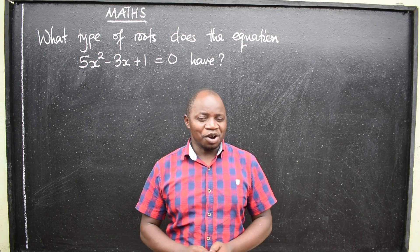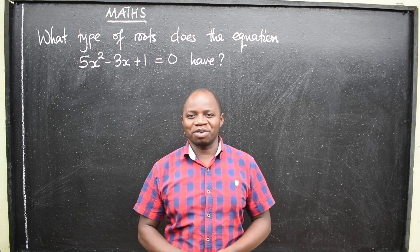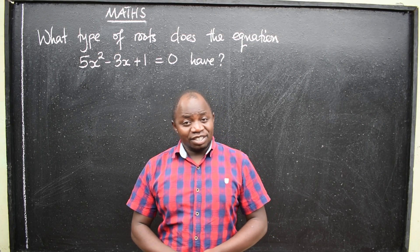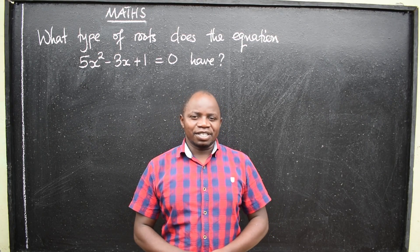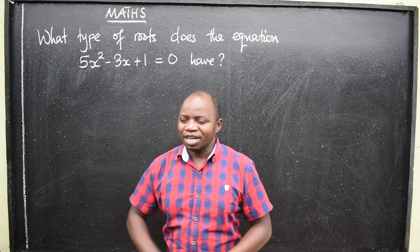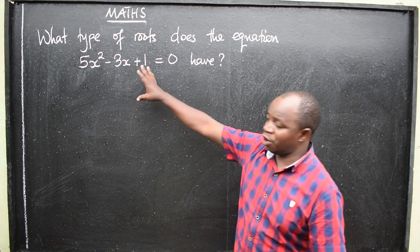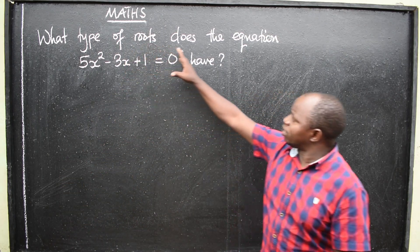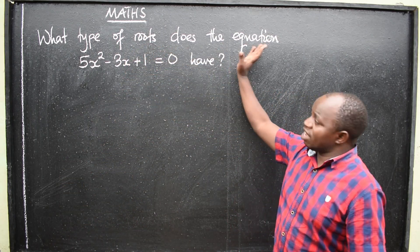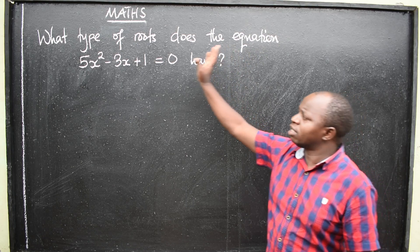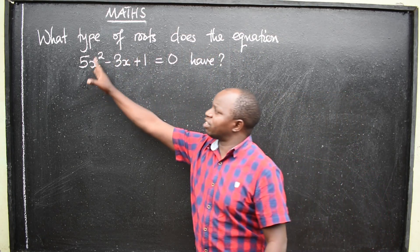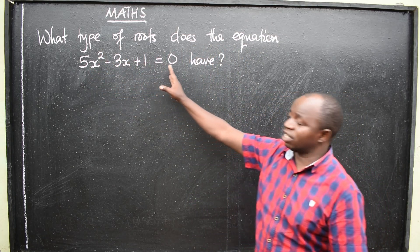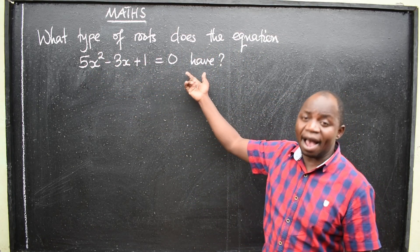Greetings, students. Hope you are well. This is Mathematics, and with me is a question on the board: What type of roots does the equation 5x squared minus 3x plus 1 equals 0 have?